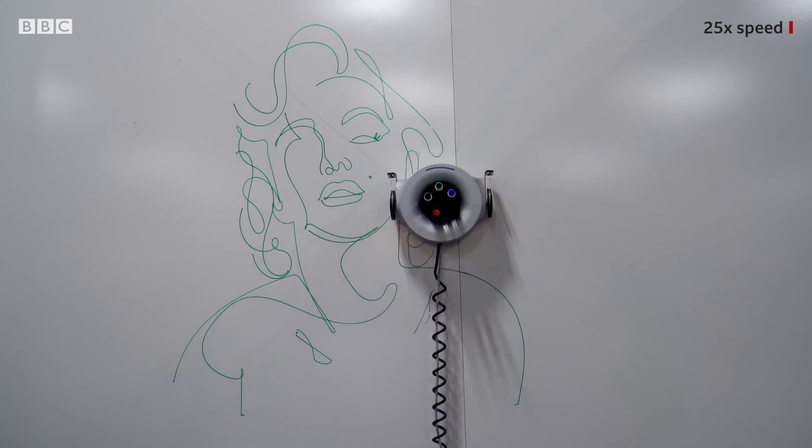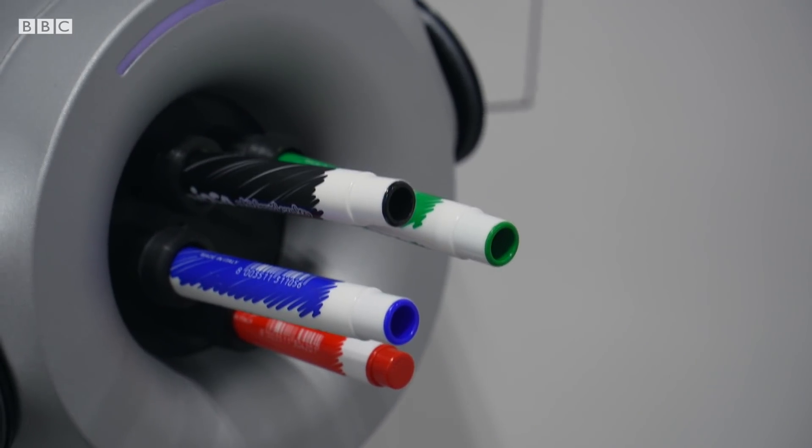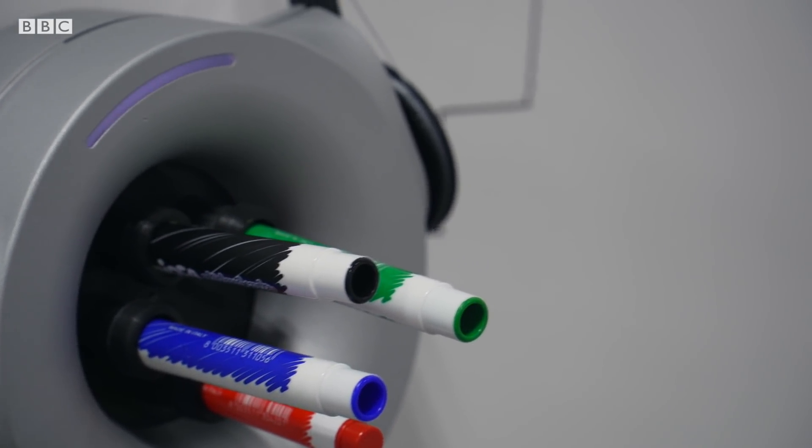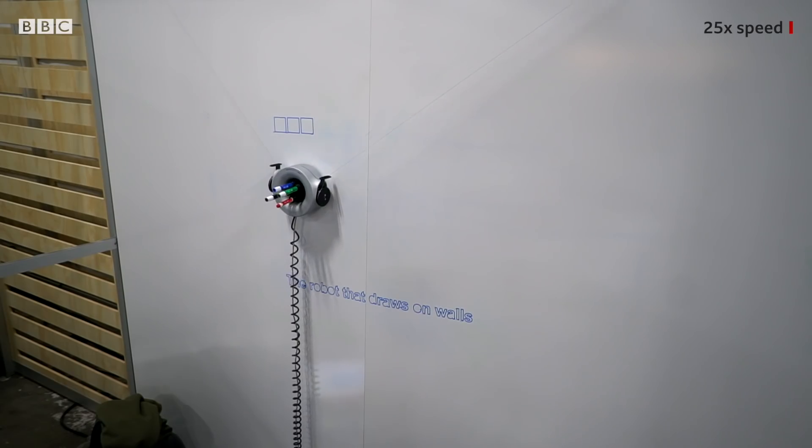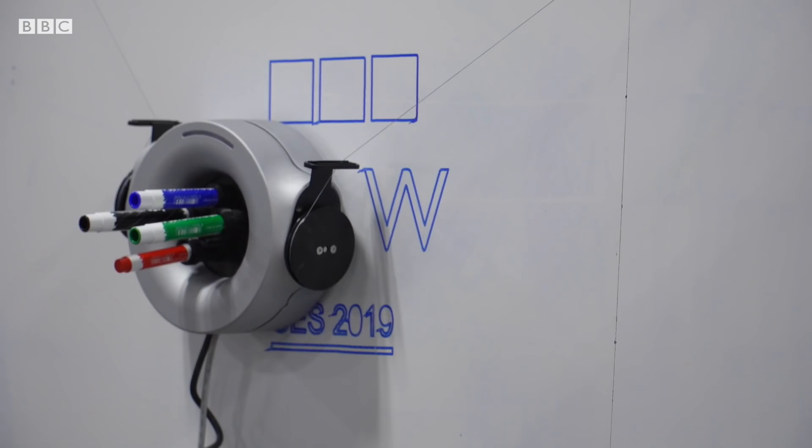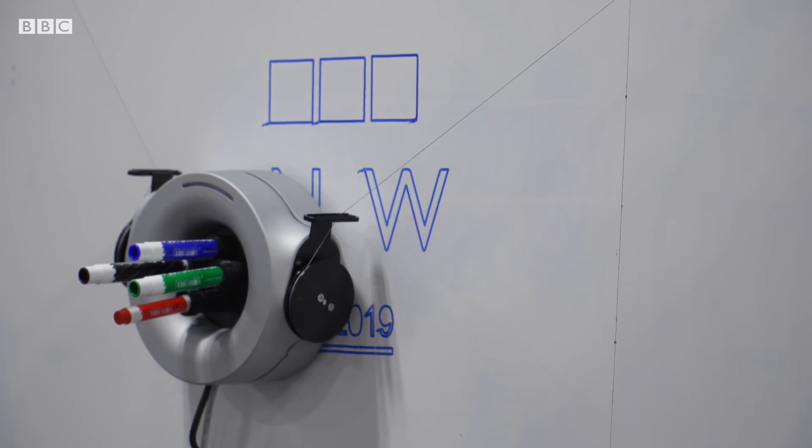This robot draws on your walls. It's called Scribit and it can transform your wall into a work of art. We've got them to draw the BBC News website to give them a bit of a challenge. And we haven't given them very long, so we'll see how the robot does.